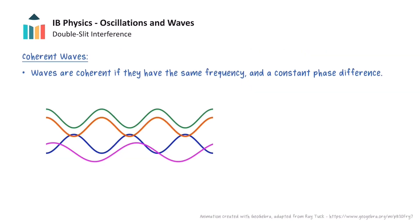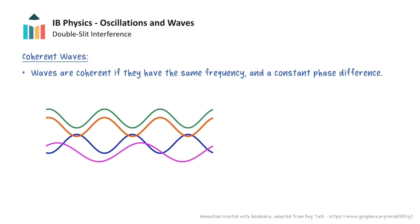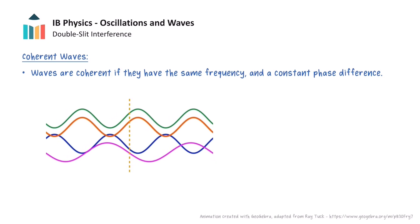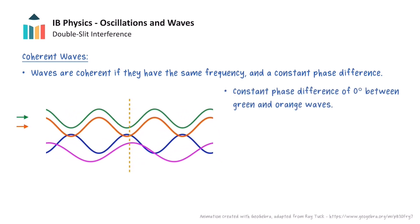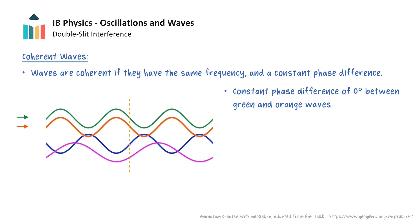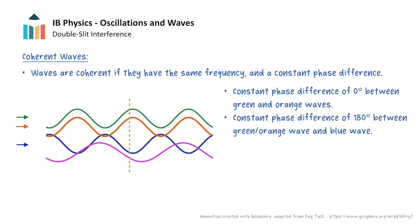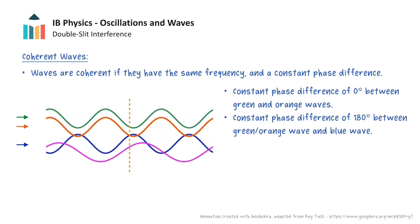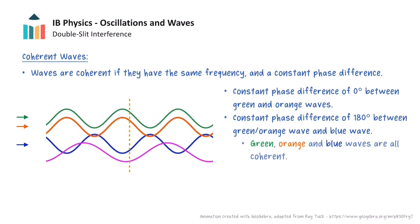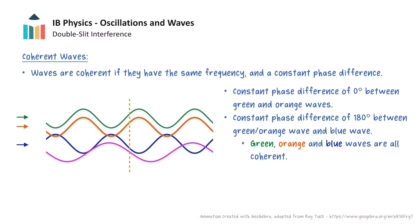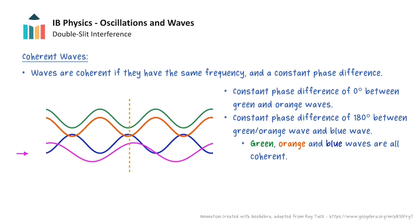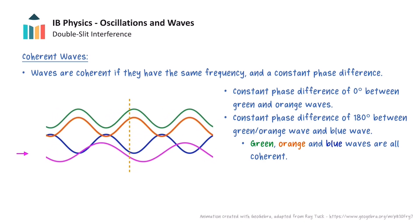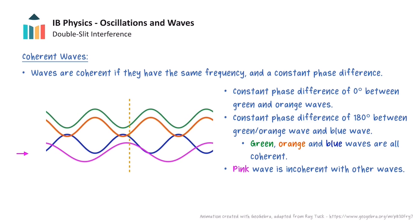Waves are said to be coherent if they have the same frequency and the phase difference between the waves is constant. If we observe the waves as they pass through this yellow dashed line, notice how the green and orange waves have a constant phase difference of 0 degrees, and the blue wave always has a phase difference of 180 degrees with the green and orange waves. All three of these waves have the same frequency and have a constant phase difference, so these are all coherent waves. If we now consider the pink wave, it has a different frequency and a non-constant phase difference to the other waves as it passes through the dashed line, so the pink wave is incoherent with the other waves.